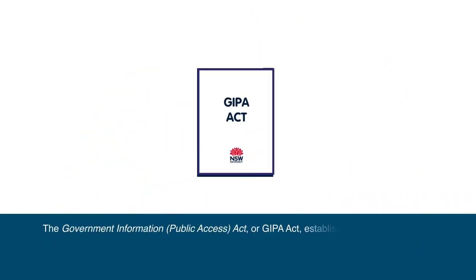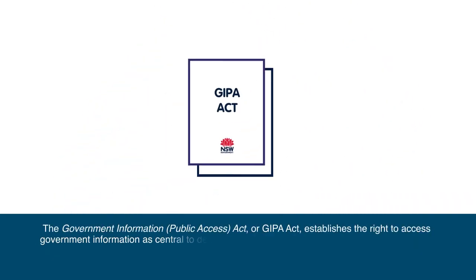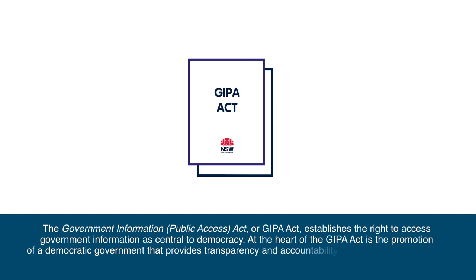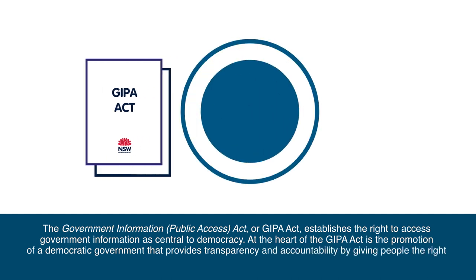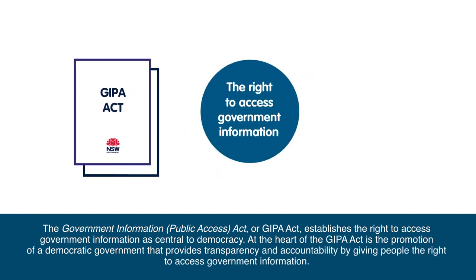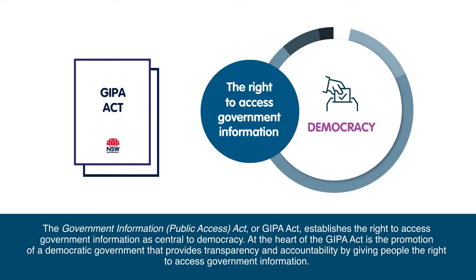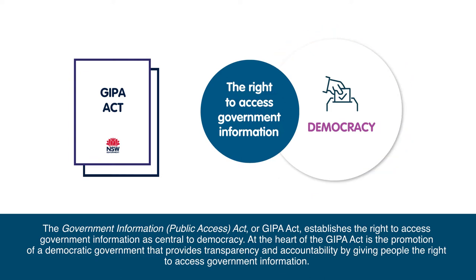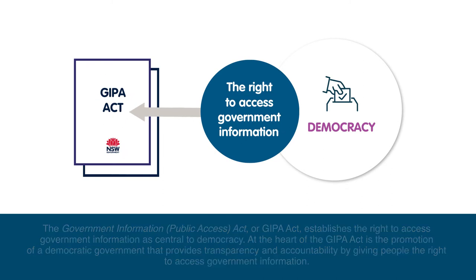The Government Information, Public Access Act, or GIPA Act, establishes the right to access government information as central to democracy. At the heart of the GIPA Act is the promotion of a democratic government that provides transparency and accountability, by giving people the right to access government information.